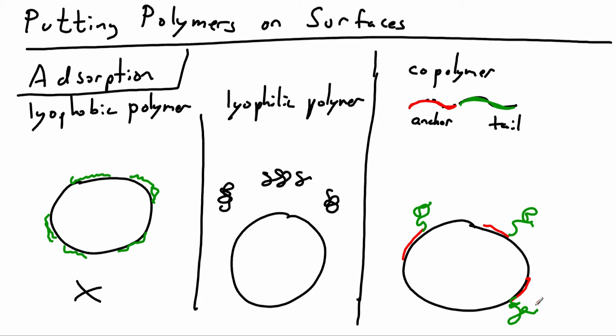There's a completely different strategy which is grafting. And grafting means that the polymer is attached covalently to the surface of the colloidal particle.